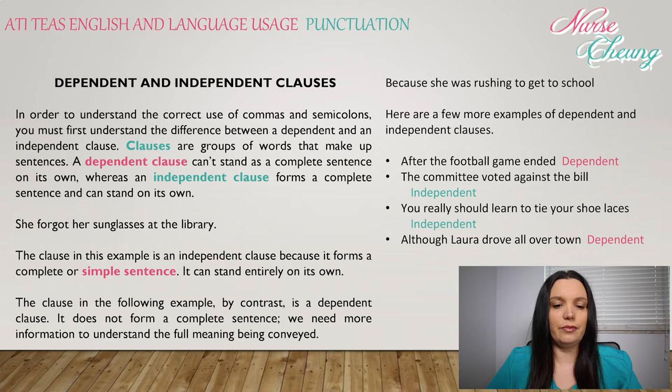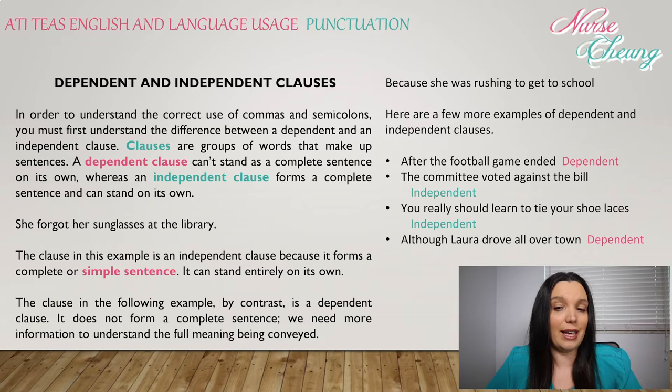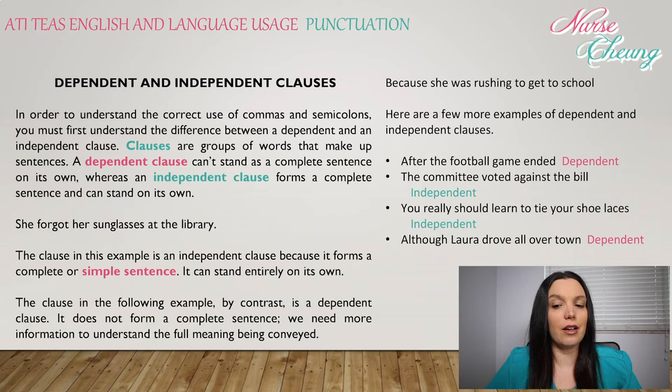By contrast, the following is a dependent clause — it does not form a complete sentence; we need more information to understand the full meaning being conveyed: 'Because she was rushing to get to school.' That doesn't make a whole lot of sense on its own. More examples: 'After the football game ended' is a dependent clause. 'The committee voted against the bill' is an independent clause. 'You really should learn to tie your shoelaces' is another independent clause. And 'Although Laura drove all over town' is a dependent clause.